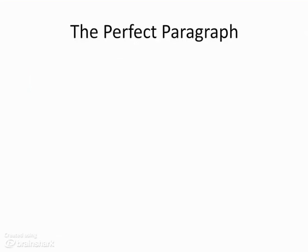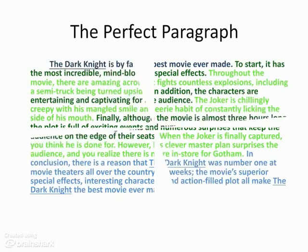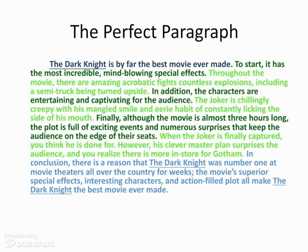Here's my perfect paragraph all together. You'll notice that the first and last sentences state my main point — the topic sentence introduces the topic, and the closing sentence wraps up and summarizes. All of the dark green are my supports. All of the light green are my elaborations. Remember, you have to have a support and an elaboration together, and in total we should have three throughout the perfect paragraph.